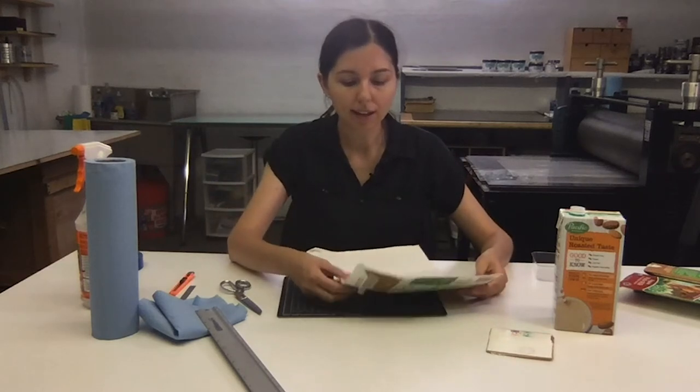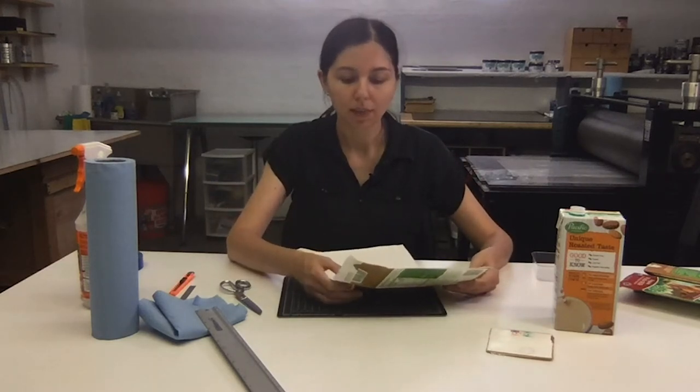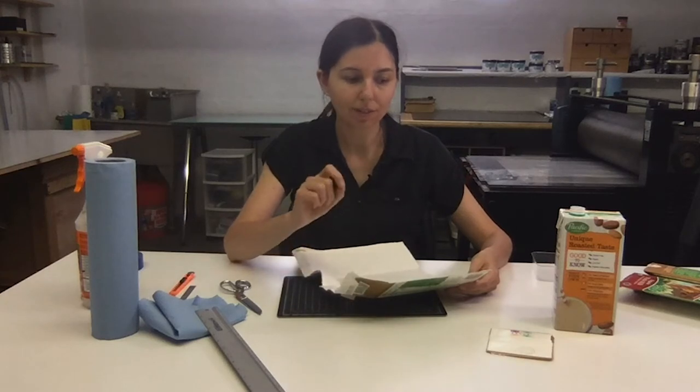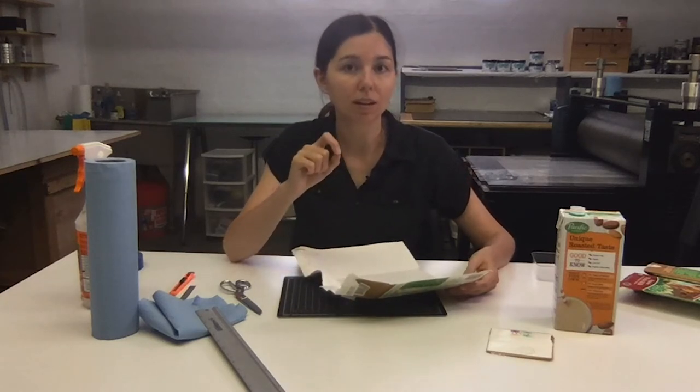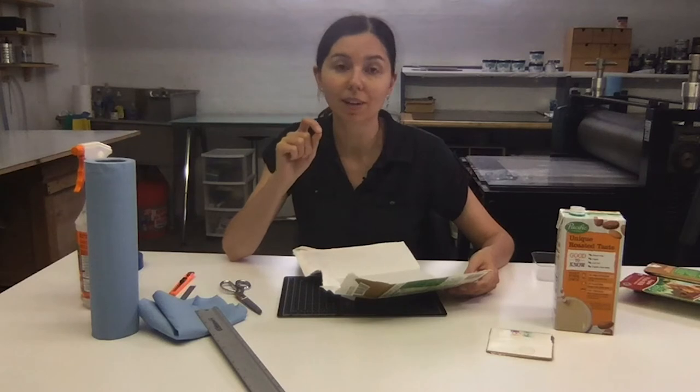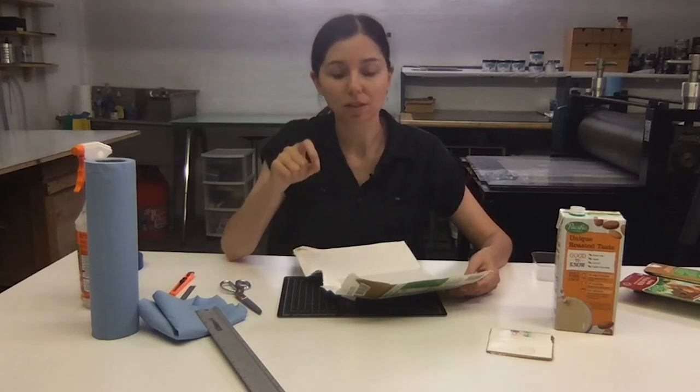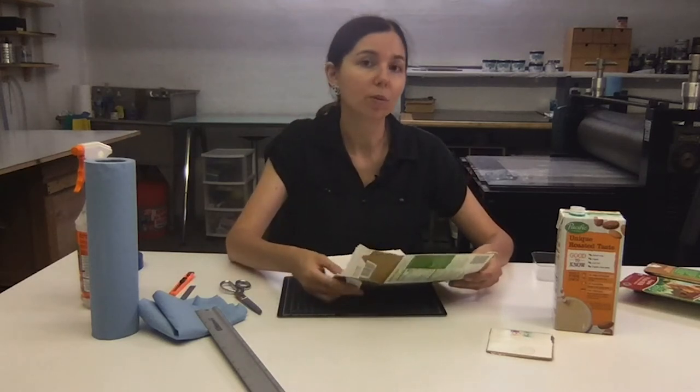Anything like a spout, you'll want to make sure you cut off because the thickest difference in height that the printing press can accommodate is about a sixteenth of an inch tall, up to an eighth of an inch tall. Something like a spout would definitely be too tall to include in the printing plate itself.